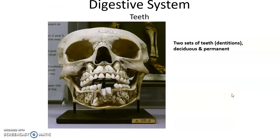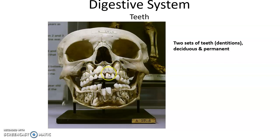We have two sets of teeth, or dentitions. We have the deciduous set, also known as the baby teeth, that first come in and then over the early years of life will fall out and be replaced by the permanent teeth. This skull is showing some of the baby teeth, and you can see the adult teeth within the skull forming and starting to push out the baby teeth.